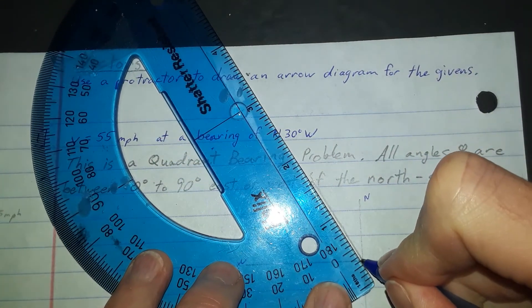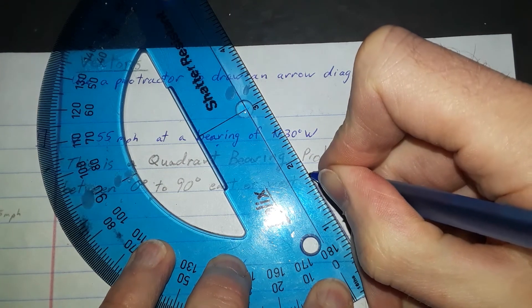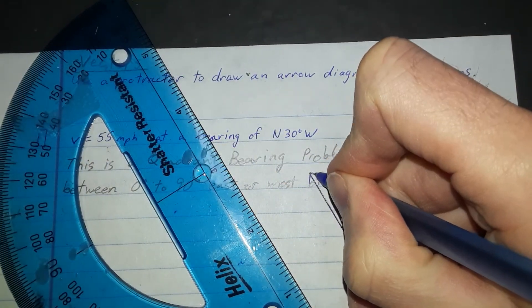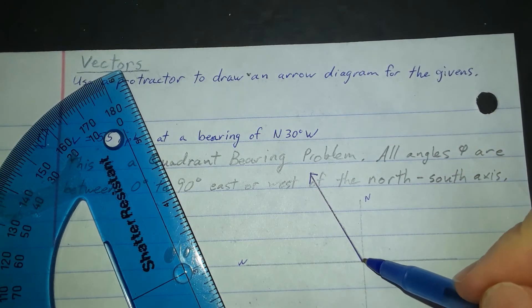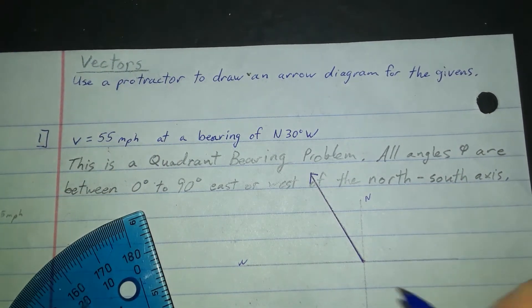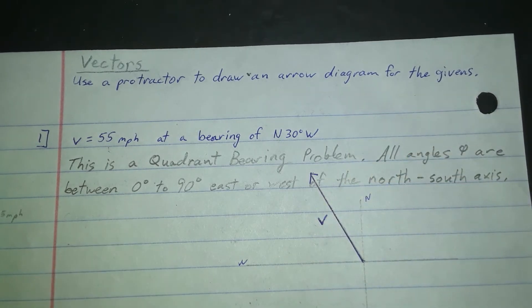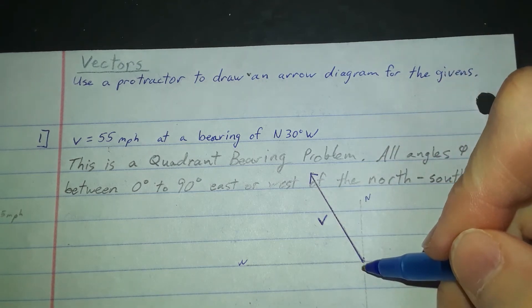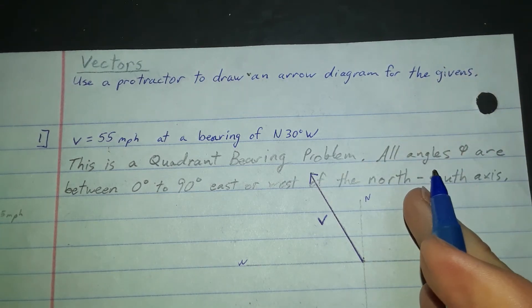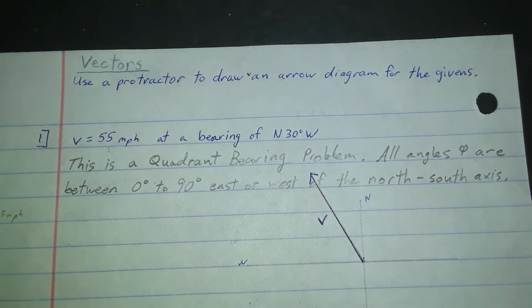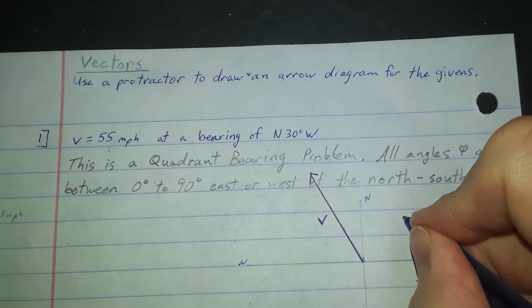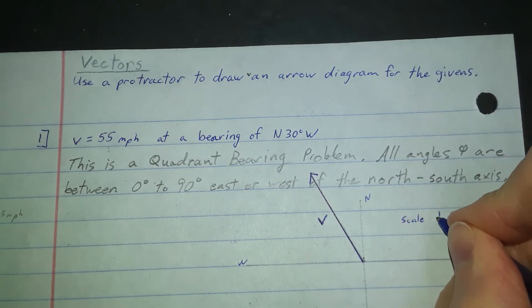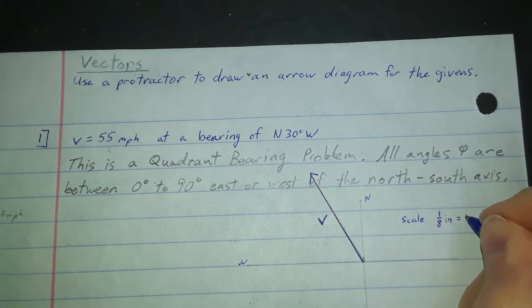Now I'm going to come in, I'm going to darken this in with my pen. This arrow that I darkened in, that is the vector V that I'm looking for. It has a magnitude of something that represents 55 miles per hour and it has a direction. It's 30 degrees west of north. You might want to put some kind of a label out here for your scale. We used an eighth of an inch equals five miles per hour. That way everybody knows what they're looking at in your arrow diagram.